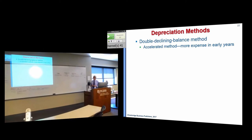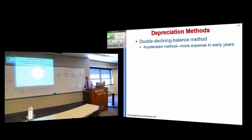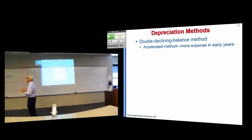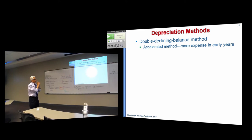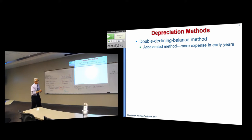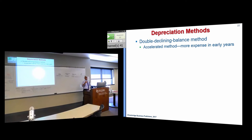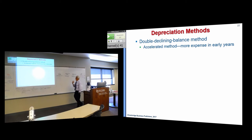The next method is declining balance — specifically, double declining balance. That means you take double the straight line rate. This is an accelerated method: you take more depreciation in the early years and less in the later years. Declining balance is actually the basis for tax depreciation, though tax depreciation differs somewhat from what we do here for financial reporting.